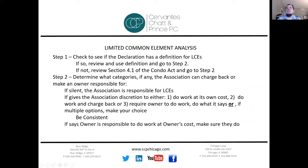Once you figure out the category, you determine what you can do. If it's silent, the association is responsible for it as a common element. If the declaration gives the association some type of discretion, you have options: one, do the work at the association's cost; two, do the work and charge it back to the owner; or three, make the owner do the work at their own cost. You must make a choice and be consistent — at least across the category of limited common elements. For example, you might treat doors and windows in one category but balconies, patios, and porches entirely differently.